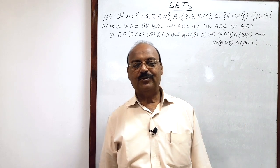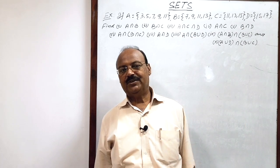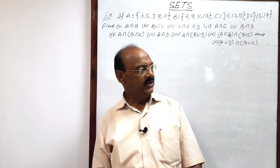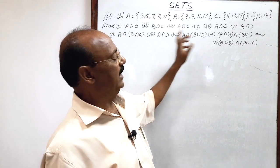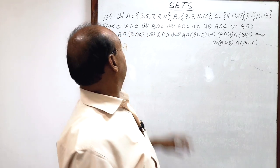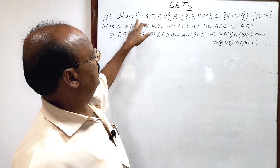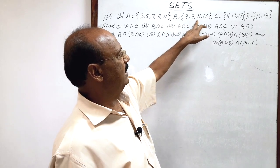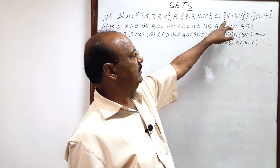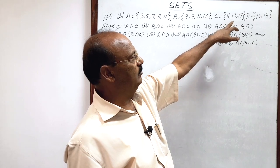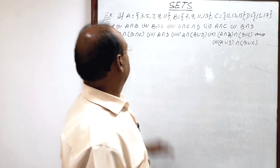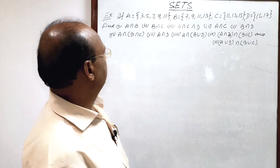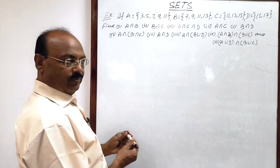Welcome students. Let us see a very interesting question from the chapter on sets. The question is based on operations of sets — basically union and intersection. Set A has elements 3, 5, 7, 9, 11; set B has elements 7, 9, 11, 13; set C has elements 11, 13, 15; and set D has elements 15 and 17. We have to find several intersections. Let us do these questions one by one.